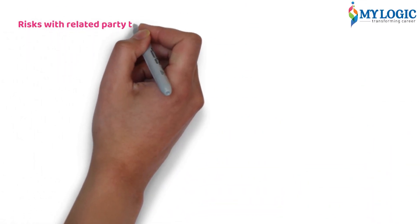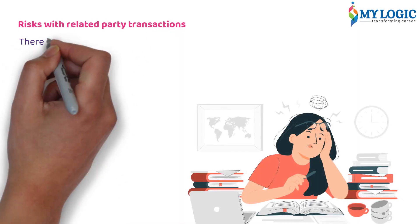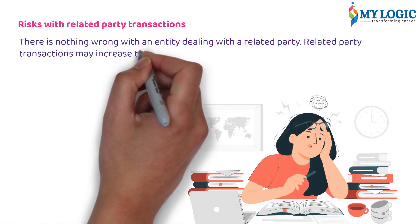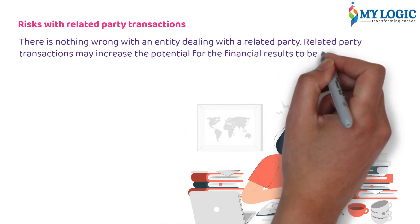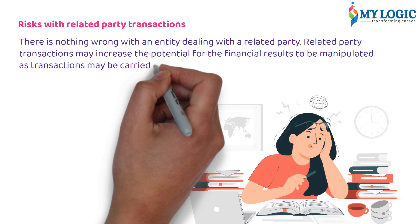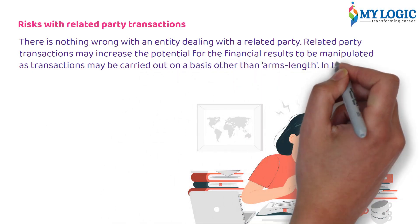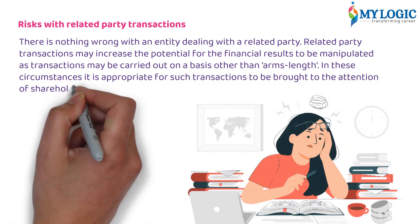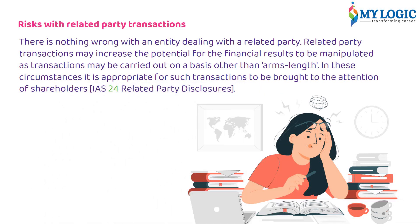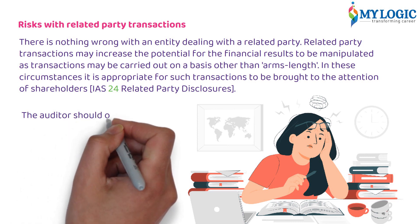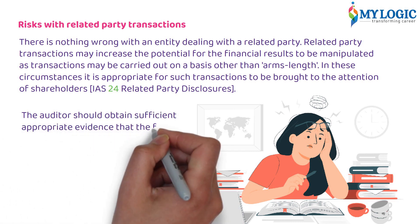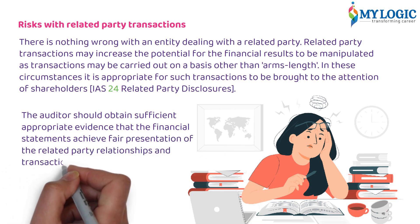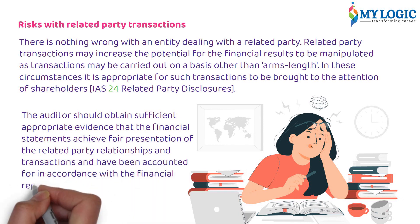Risks with related party transactions: there is nothing wrong with an entity dealing with a related party. However, related party transactions may increase the potential for financial results to be manipulated, as transactions may be carried out on a basis other than arm's length. In these circumstances, it is appropriate for such transactions to be brought to the attention of shareholders. The auditor should obtain sufficient appropriate evidence that the financial statements achieve fair presentation of the related party relationships and transactions and have been accounted for in accordance with the financial reporting framework.